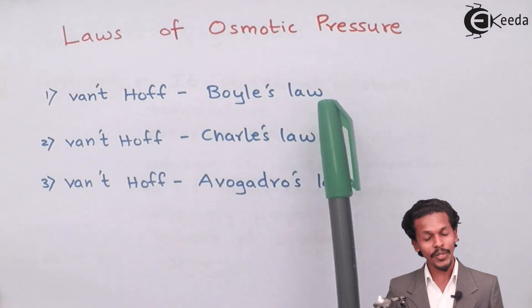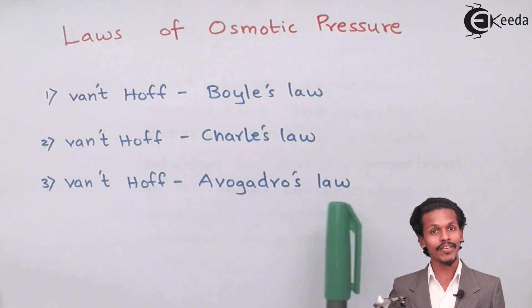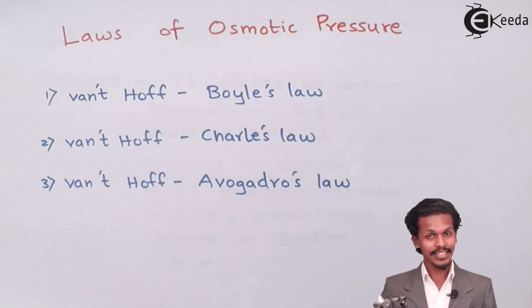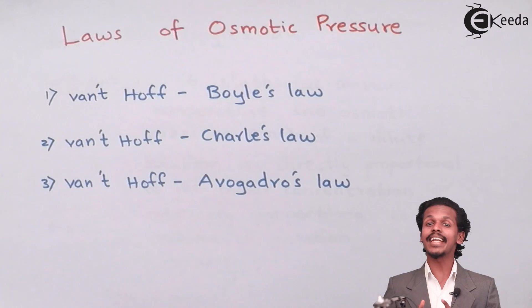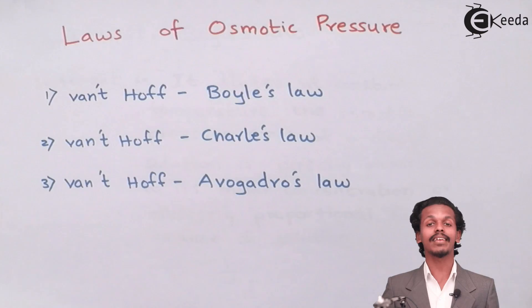The first one is van't Hoff-Boyle's law, the second is van't Hoff-Charles law, and the third is van't Hoff-Avogadro's law. These are the three laws which are earlier also studied by us. These are the gas laws, but they are related to osmotic pressure and hence they have names like van't Hoff-Boyle's law, Charles law, and Avogadro's law. So let us learn each and every expression very deeply.